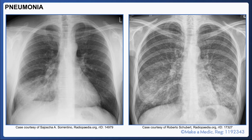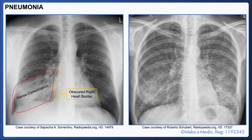Pneumonia refers to an infection within the lungs where the air spaces become filled with fluid or pus. Sometimes you'll be able to see dense consolidation in a specific area of the lungs. In the case on the left, you can see dense consolidation in the right lower zone with obscuring of the right heart border.